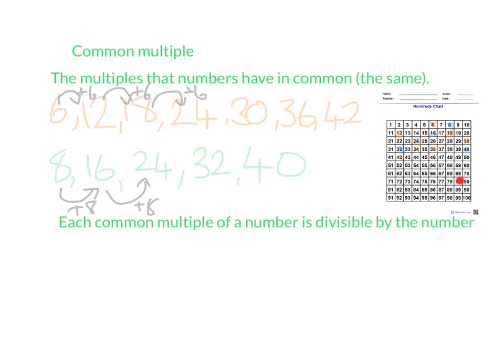So if you use the 100s chart, that's what you're looking for. If you're doing it by listing out the multiples, you're looking for the number that's the same. So we go through the list and we see that our common multiple is going to be our 24. That's the only common number — a common number is when you have the same value appearing in each of the multiples lists.